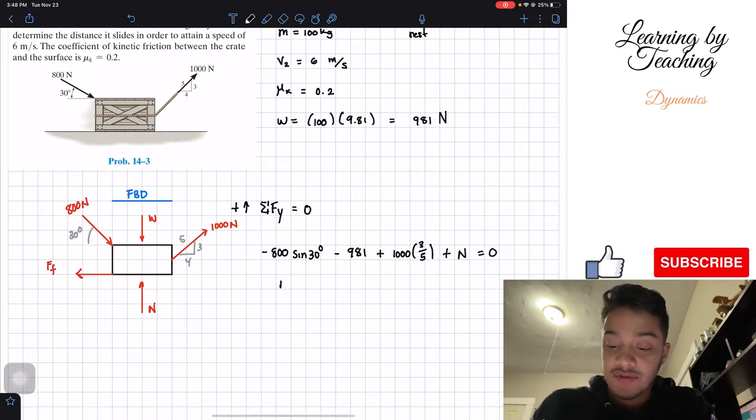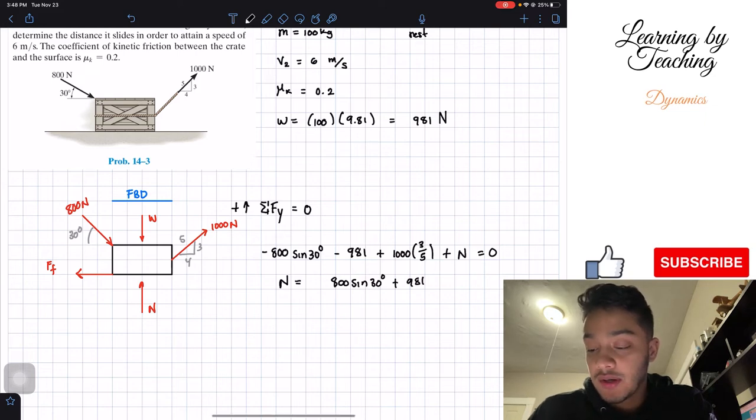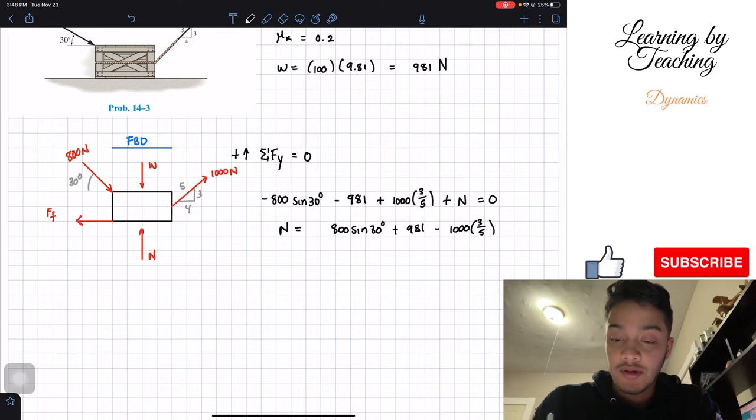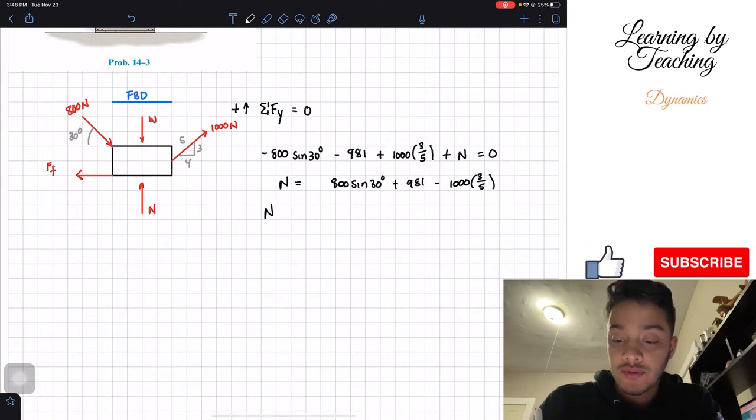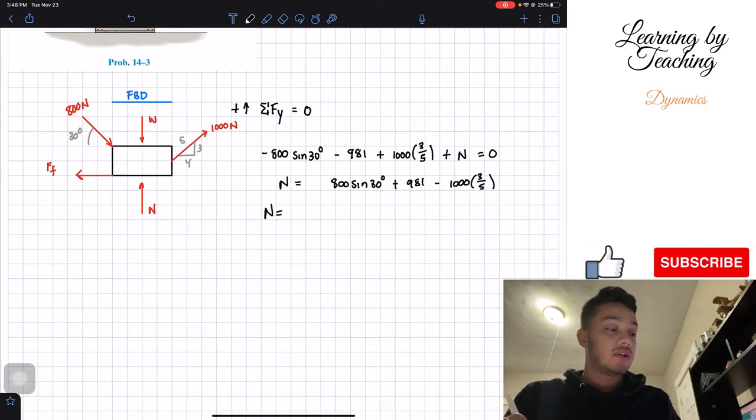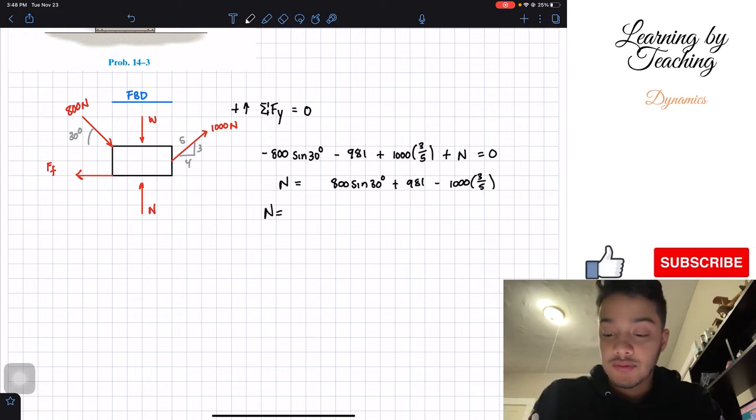So if we solve for my normal force, we should have 800 sine of 30 degrees plus 981 minus 1,000 multiplied by 3 fifths. And if we plug this into our calculator, our normal force should be equal to 781 newtons.